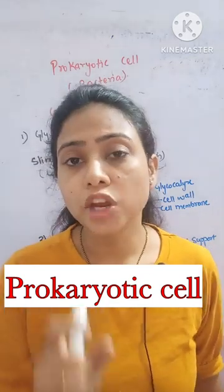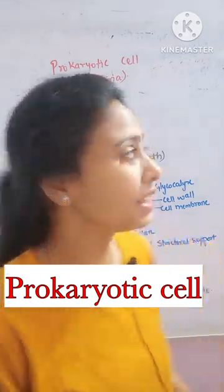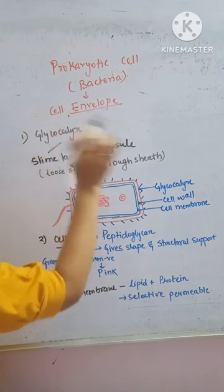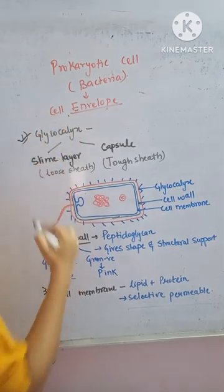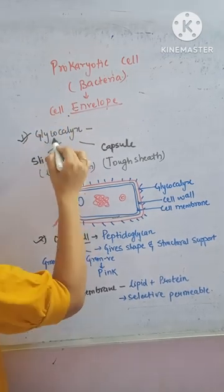Let's understand the cell envelope of a prokaryotic cell, that is bacteria. The cell envelope has three parts: glycocalyx, cell wall, and cell membrane.